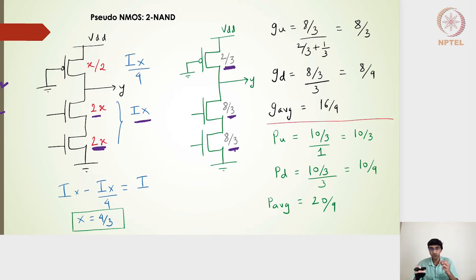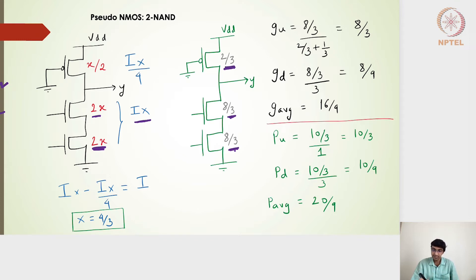This resembles our two-input NAND gate with size 2 and 2 on the pull-down side. In the inverter the pull-down size was 1, which became 2 and 2 here; likewise 4/3 became 8/3 and 8/3 for the two transistors, while 2/3 remains the same as the pseudo-NMOS inverter's pull-up PMOS transistor size.